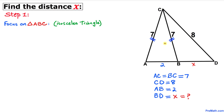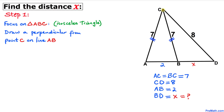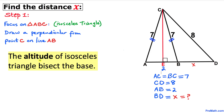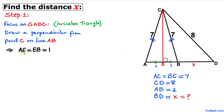Let's focus on triangle ABC, which is an isosceles triangle, and draw a perpendicular from point C onto line AB. We recall the well-known fact that the altitude of an isosceles triangle bisects the base into two equal parts. The perpendicular is 90 degrees, so since the whole length AB is 2 units, each part is 1 unit. Therefore AE equals EB, and each equals 1.